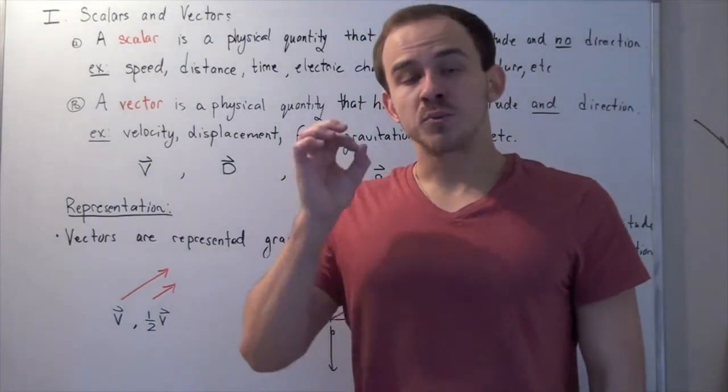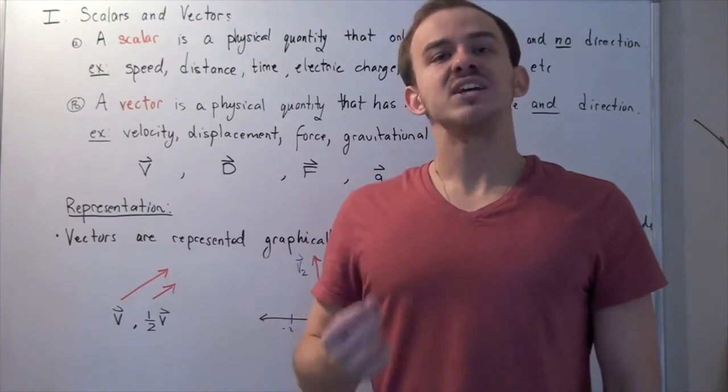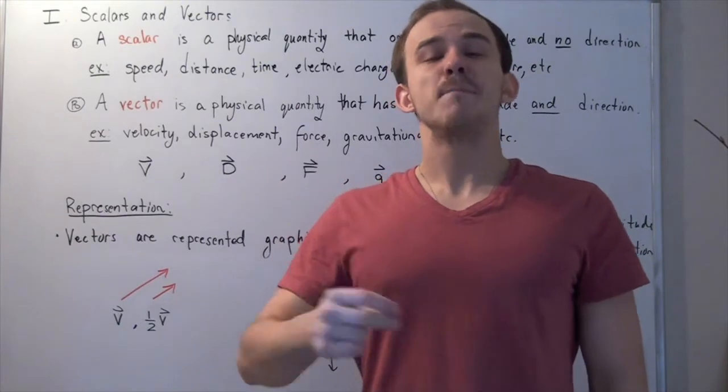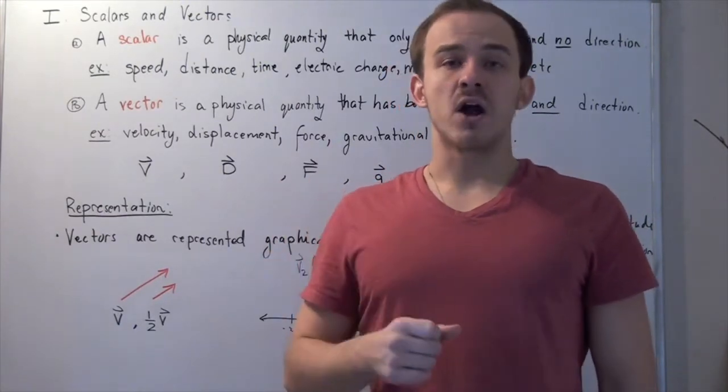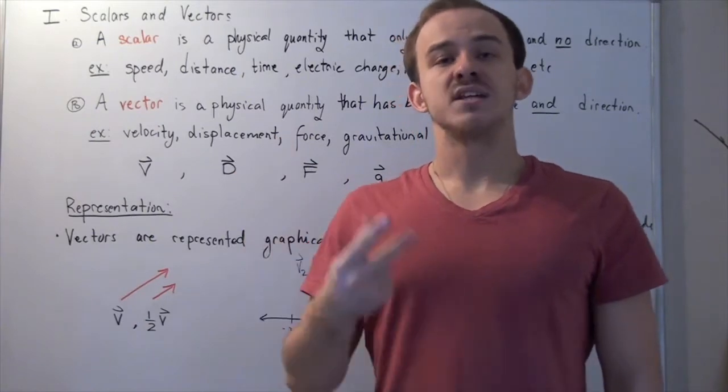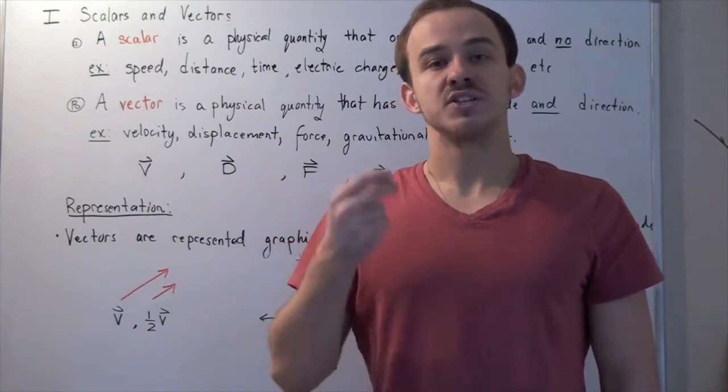So you can represent vectors graphically by using arrows. The length of the arrows represents or is proportional to the magnitude, the amount of the physical quantity. While the direction of that arrow represents the direction that the object is moving in.